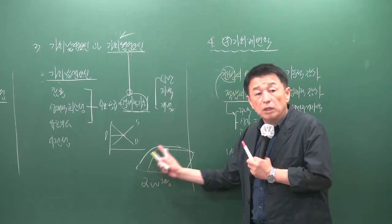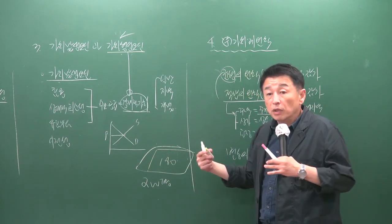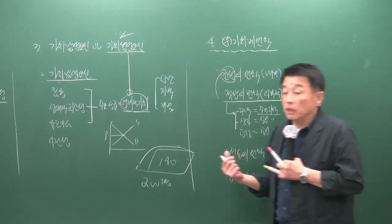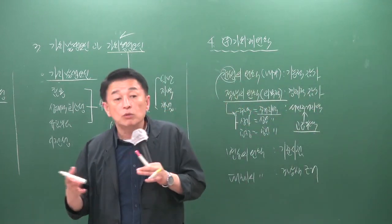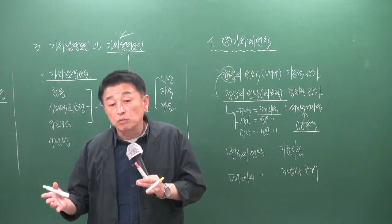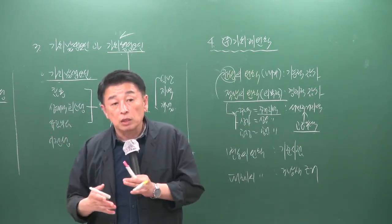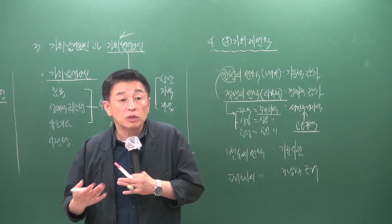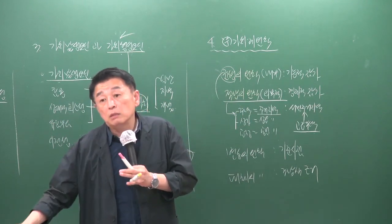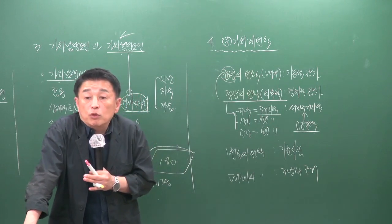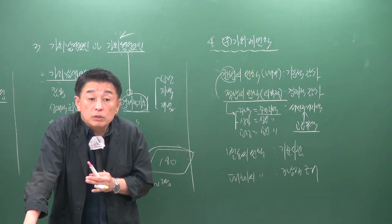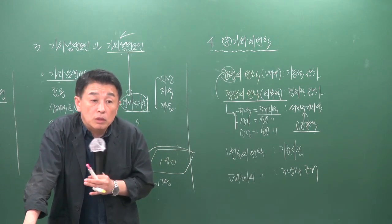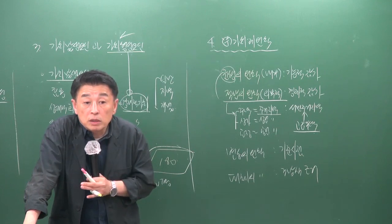예를 들어 대지가 200평인데 건물 연면적이 180평이면 여유 공간이 없어 과대 건물이 발생합니다. 오래된 건물들은 주차 공간이 없이 연면적으로만 채워져 있어 밸런스가 맞지 않습니다. 요즘 지어지는 건물들은 주차 공간을 확보해야 하며, 주차 공간이 없으면 부동산 가치가 떨어질 수 있습니다.